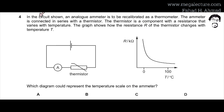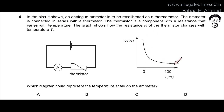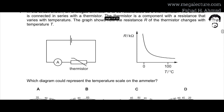MCQ number 4: an analog ammeter is to be recalibrated as a thermometer. It is connected in series with a thermistor, whose resistance varies with temperature. The graph shows that as temperature increases, the resistance of the thermistor decreases — it becomes lesser and lesser.